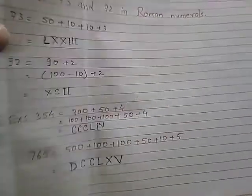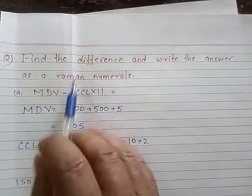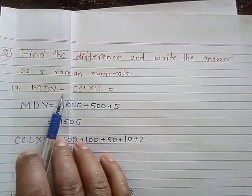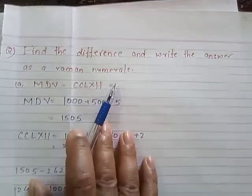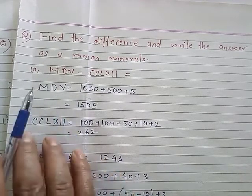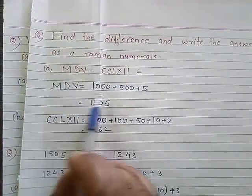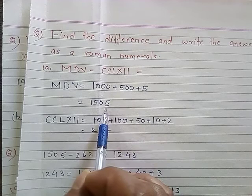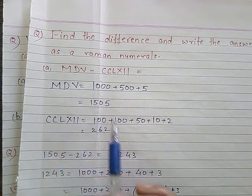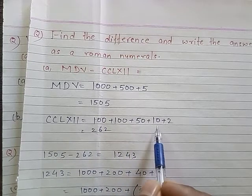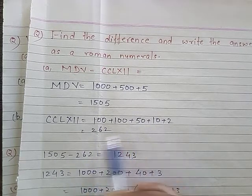Next example: find the difference of MDV minus CCLXII and write the answer in Roman numerals. MDV equals 1000 plus 500 plus 5, which is 1505. CCLXII equals 100 plus 100 plus 50 plus 10 plus 2, which is 262. So 1505 minus 262 equals 1243.